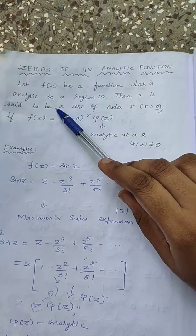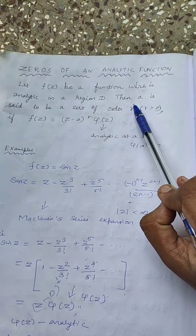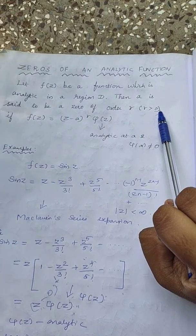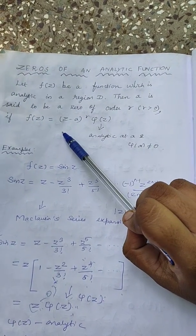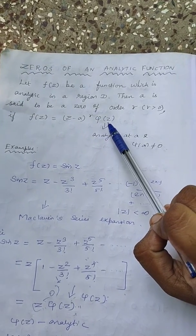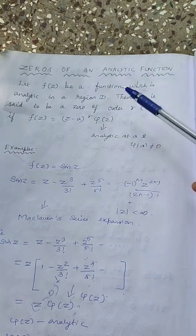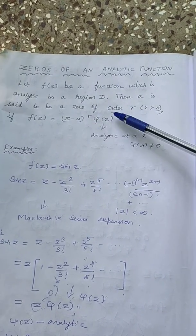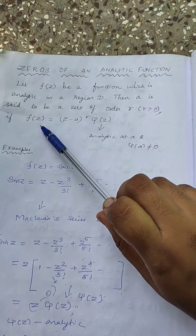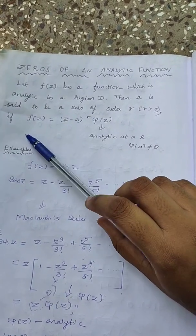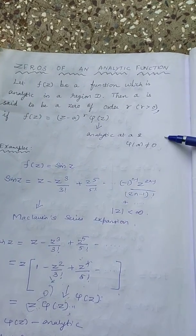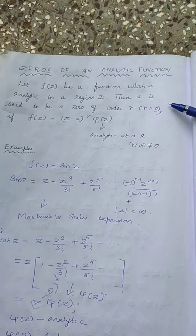I am having a function that is analytic in region D. Then A is said to be a zero of order R, where R is greater than 0, if F of Z can be written in the form Z minus A the whole power R times Phi of Z, where this Phi of Z is analytic at A and Phi of A is not equal to 0. So A is a zero of F of Z of order R if F of Z is written in this form where this function is analytic at A and that is not equal to 0. This is the formal definition.